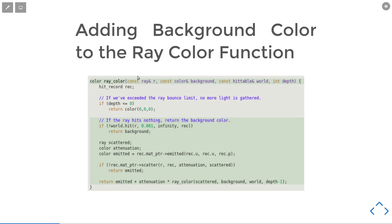We can add a background color to our scene. Now our ray color function takes a background parameter that will get passed into itself recursively and get applied when we don't hit anything.